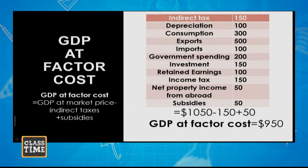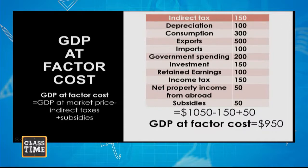To calculate GDP at factor cost, we make adjustments for taxes and subsidies. Since subsidies lower prices and taxes increase prices, we do the opposite to remove their effect: we add the subsidies and subtract the taxes. So GDP at market price of $1,050, minus $150 in taxes, plus $50 in subsidies, gives us GDP at factor cost of $950.